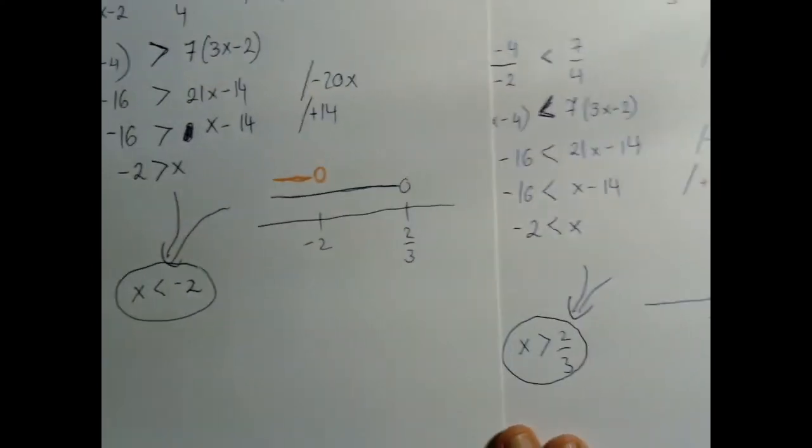So from this part, we got that x will work if it's less than negative 2. So we had two cases. When the denominator was positive, the solution set was that x is greater than 2 thirds. When the denominator was negative, we got that x is less than negative 2. So altogether, these are the two possible cases.